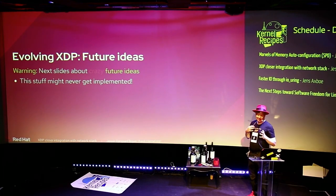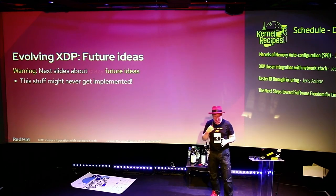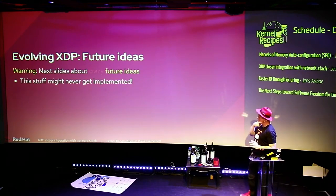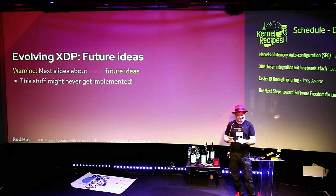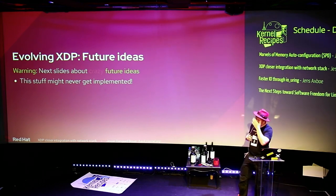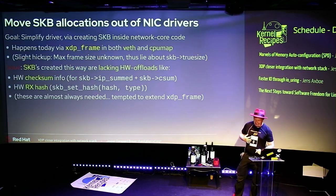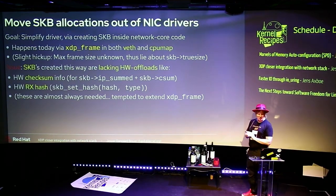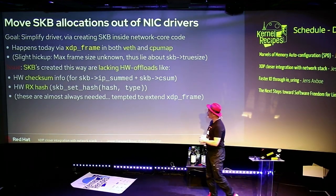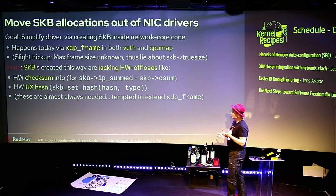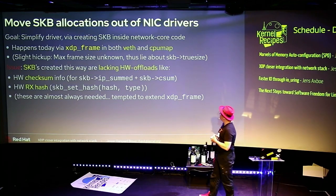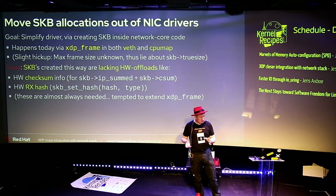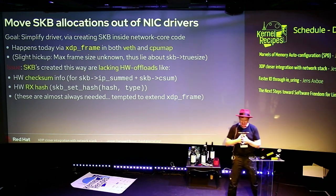Now let's talk about evolving XDP — my crazy ideas. Now you know the data structures and I'm going to juggle them to get something funny out of it. This stuff might never get implemented, and if Dave shakes his head I know it won't get in. One crazy thing I want to do is move the SKB allocations out of the NIC drivers — a fairly big step. The goal is to simplify drivers and create SKB construction inside the core code. I've already sort of snuck this in in two places in the network stack.